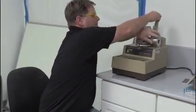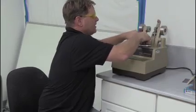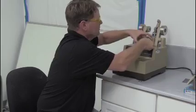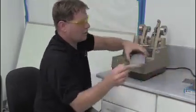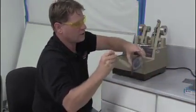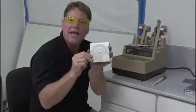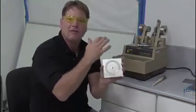You take this disc back off. You dust it off. Make sure all the dust is off of there and then you can see the tracks. And we go and weigh this again and we report the loss in weight from the Tabor wheel.